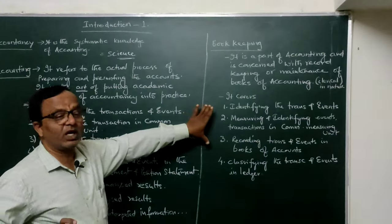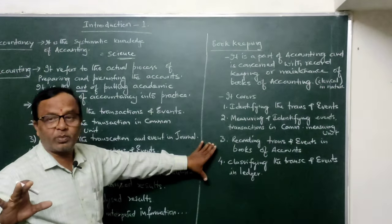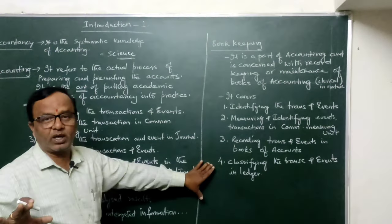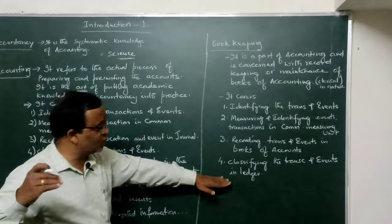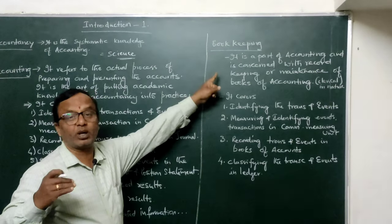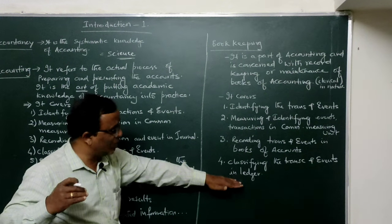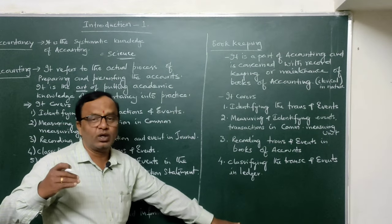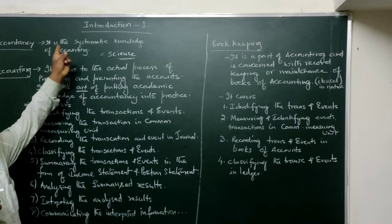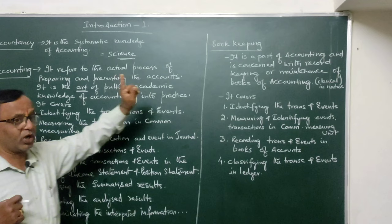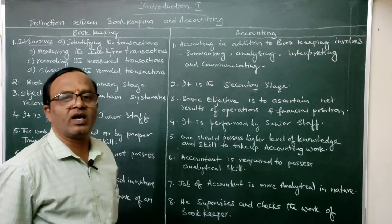A person who carries on both bookkeeping and the other accounting work is called an accountant. A person who does only the work of identifying transactions, measuring them, recording in books of accounts, and posting to the ledger account is called a bookkeeper. An accountant has complete knowledge of accountancy and can carry on bookkeeping work as well as all other aspects beyond bookkeeping.